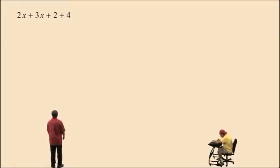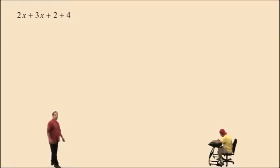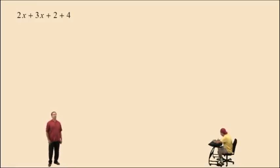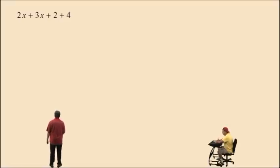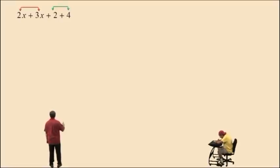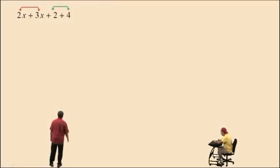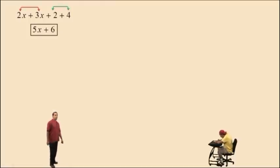Let's look at this problem: 2x plus 3x plus 2 plus 4. Everything is being added, so remember we can go in any order we want. This is important, so pay attention. We can do 2x plus 3x, which is 5x, and we can add the 2 and the 4, which is 6. We can do this because everything is being added. So we get 5x plus 6. That's our answer.